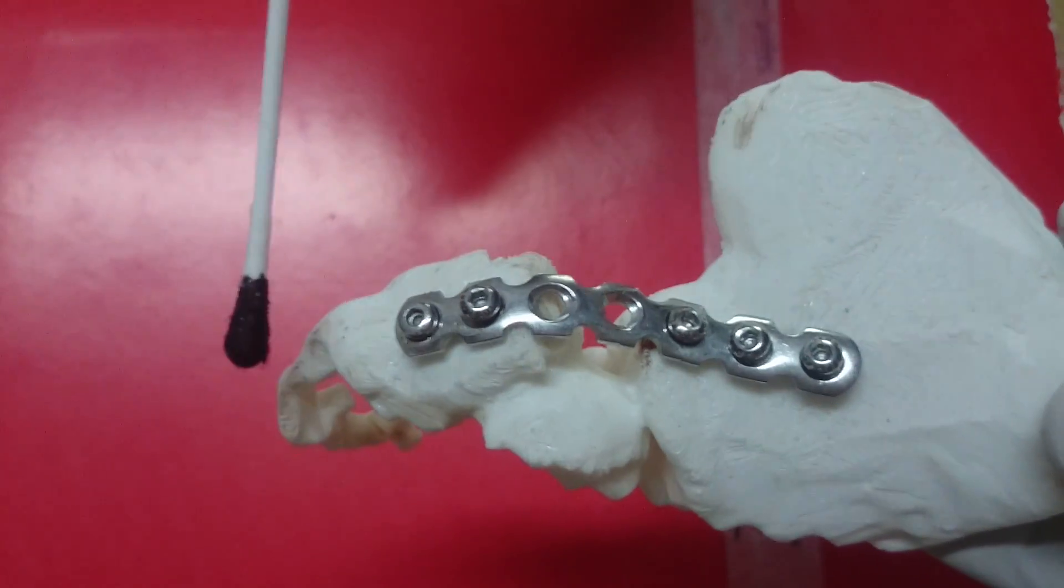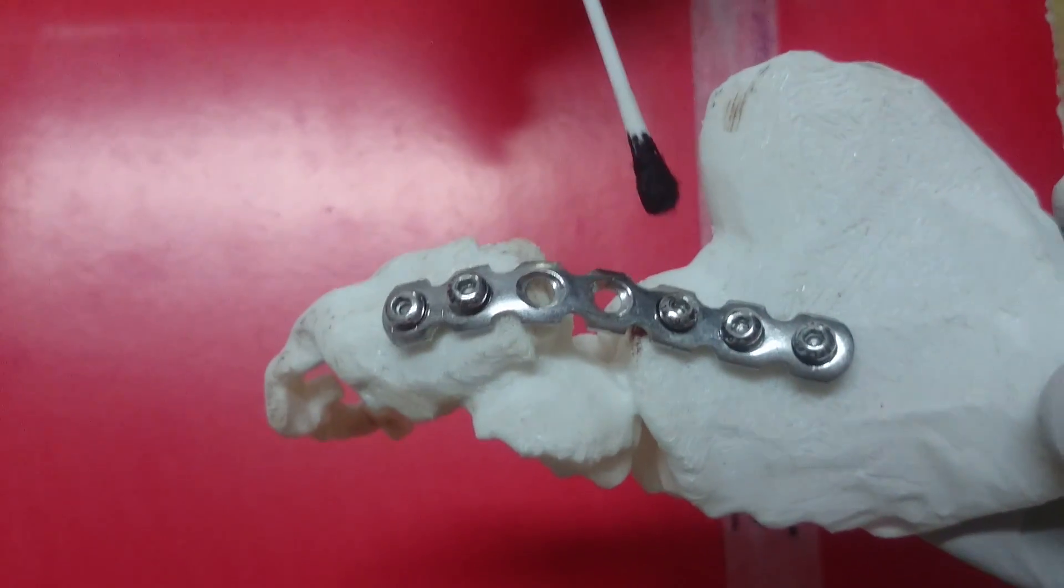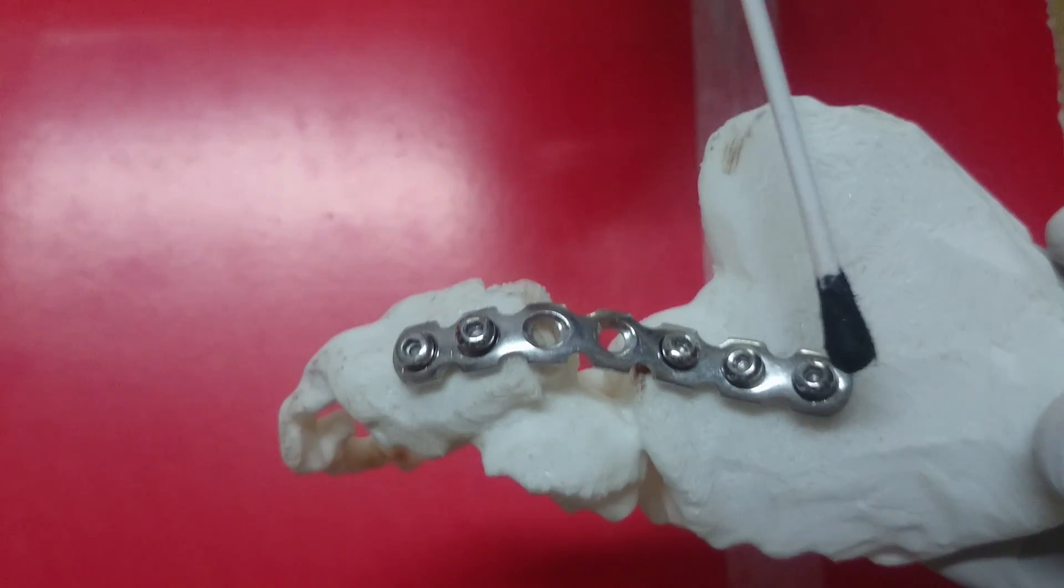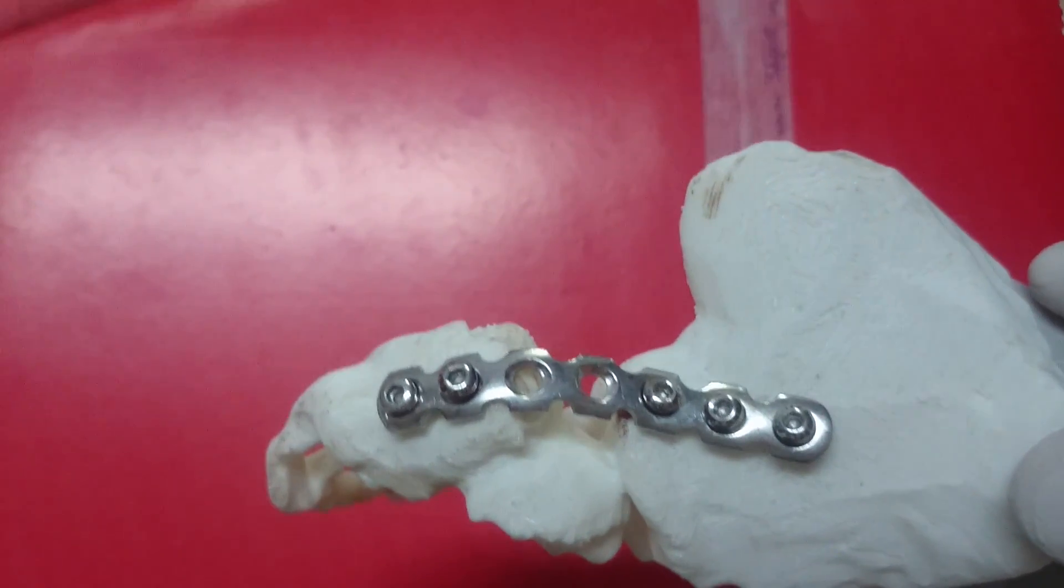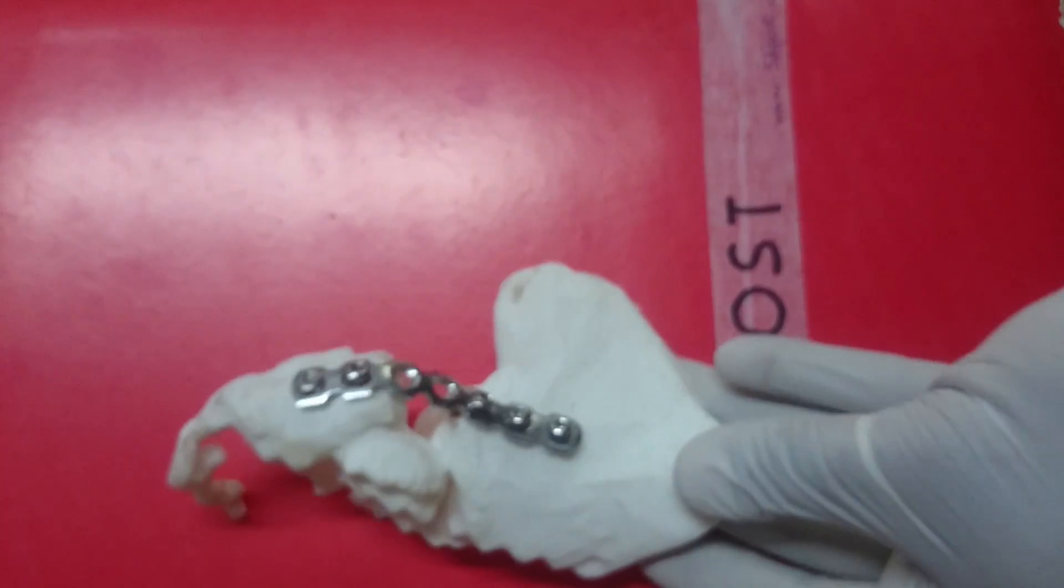This is the femoral head. This is the ischial tuberosity. This is the sciatic notch. This is the ilium. And this plate was then contoured with the help of these standard templates which are available.